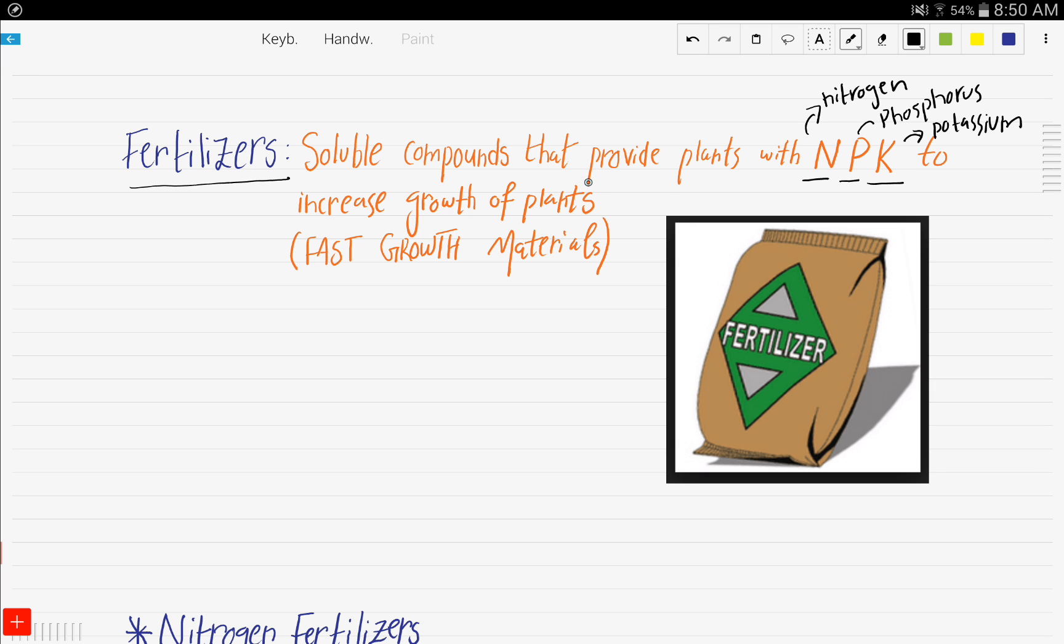and this stands for potassium. So soluble compounds that provide plants with nitrogen, phosphorus, or potassium, or all of them, to increase the growth of plants. These are fast-growth materials. And if you have a backyard or a farm, of course I'm sure you would be familiar with the concept of fertilizers.